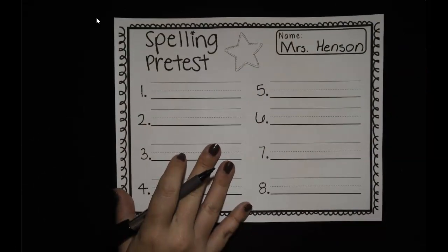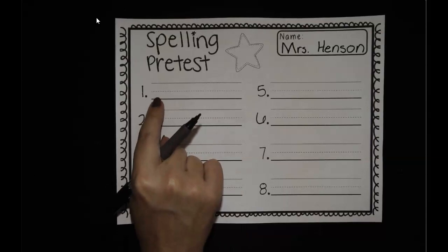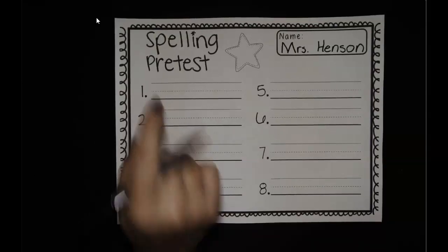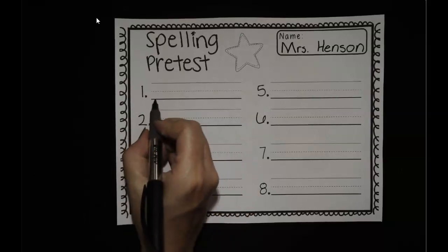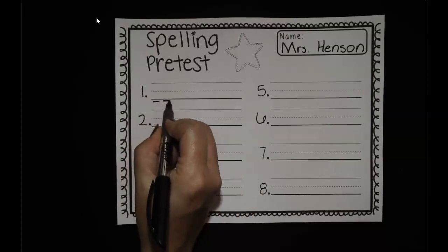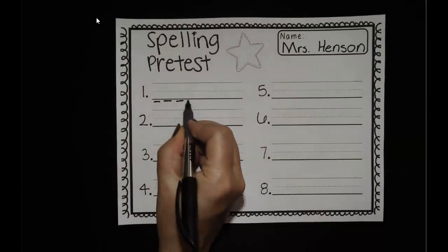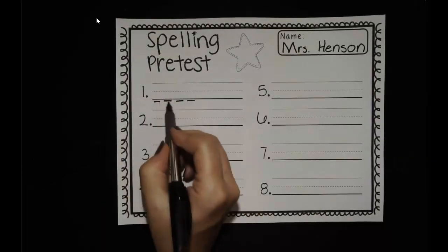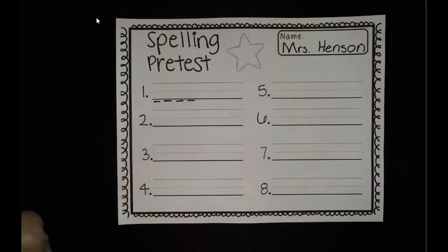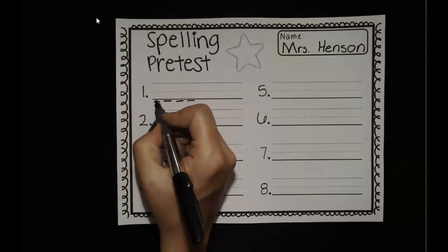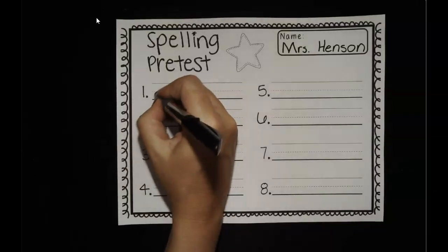Let's take our pretest. Your first word — we'll do this one together — is drip. Drip. Let's listen to how many sounds first: D, ur, i, p. How many sounds did we hear? One, two, three, four. So we need four letters. Let's see what we heard first — D.